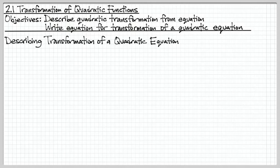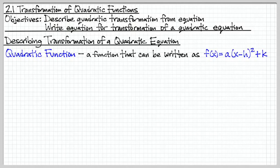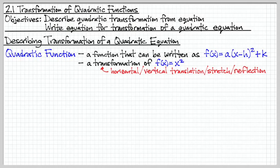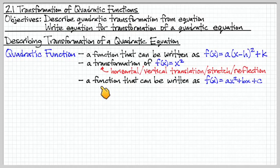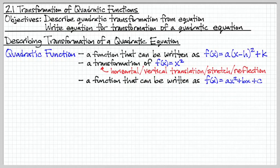Let's first define what we mean by a quadratic function. A quadratic function is any function that can be written in this form here. I also like this definition: it's any sort of transformation — and by that I mean horizontal and vertical translations, stretches and shrinks, and reflections — of this parent function f of x equals x squared. And here's yet another standard definition: it's any function that can be written as ax squared plus bx plus c. Any of these definitions would suffice in defining a quadratic function.